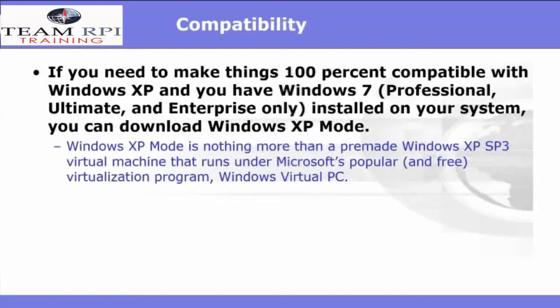If you need to make things 100% compatible with Windows XP and you have Windows 7 installed on your system, you can download Windows XP Mode. Windows XP Mode is nothing more than a pre-made Windows XP Service Pack 3 virtual machine that runs under Microsoft's virtualization program, Windows Virtual PC.